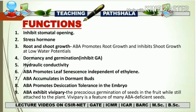The fourth function is in dormancy and seed germination. ABA inhibits the GA — gibberellic acid. ABA is known for inhibiting germination of seeds as well as promoting seed dormancy. Promoting dormancy means promoting inactivation of seeds. While studying gibberellic acid, we saw synthesis of hydrolytic enzymes that activate and break down seed dormancy, leading to germination with the help of gibberellin.